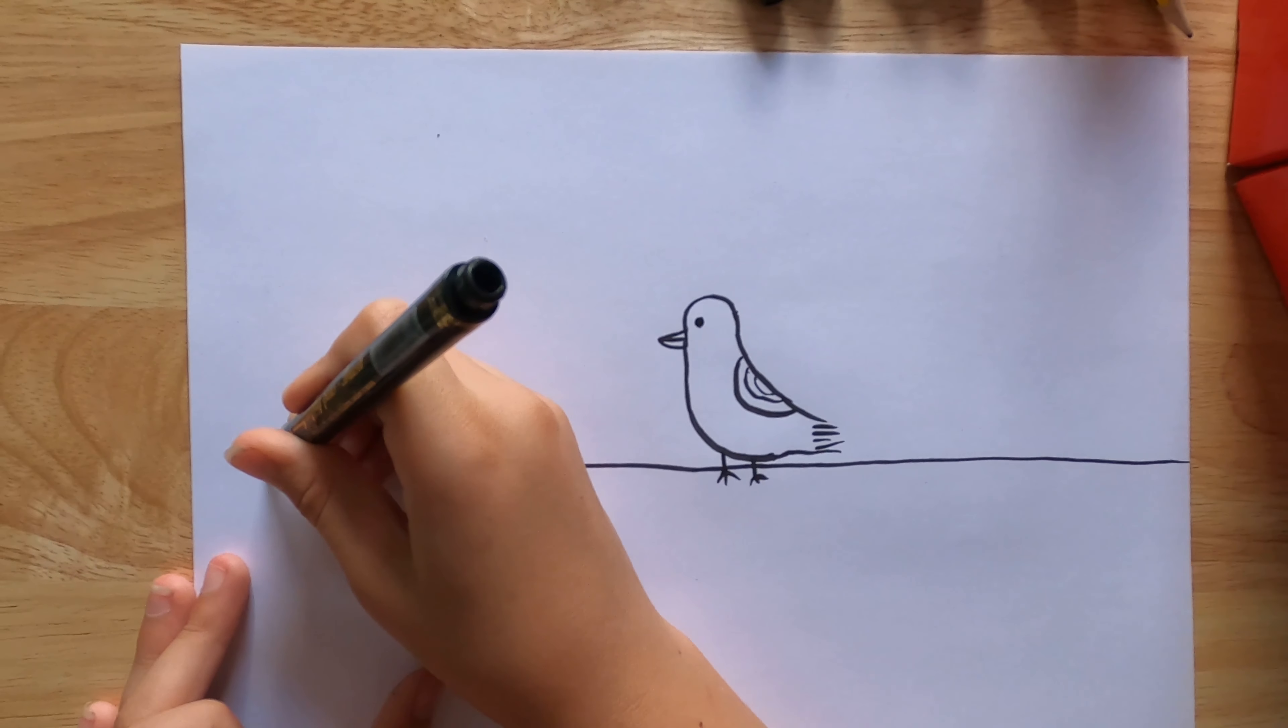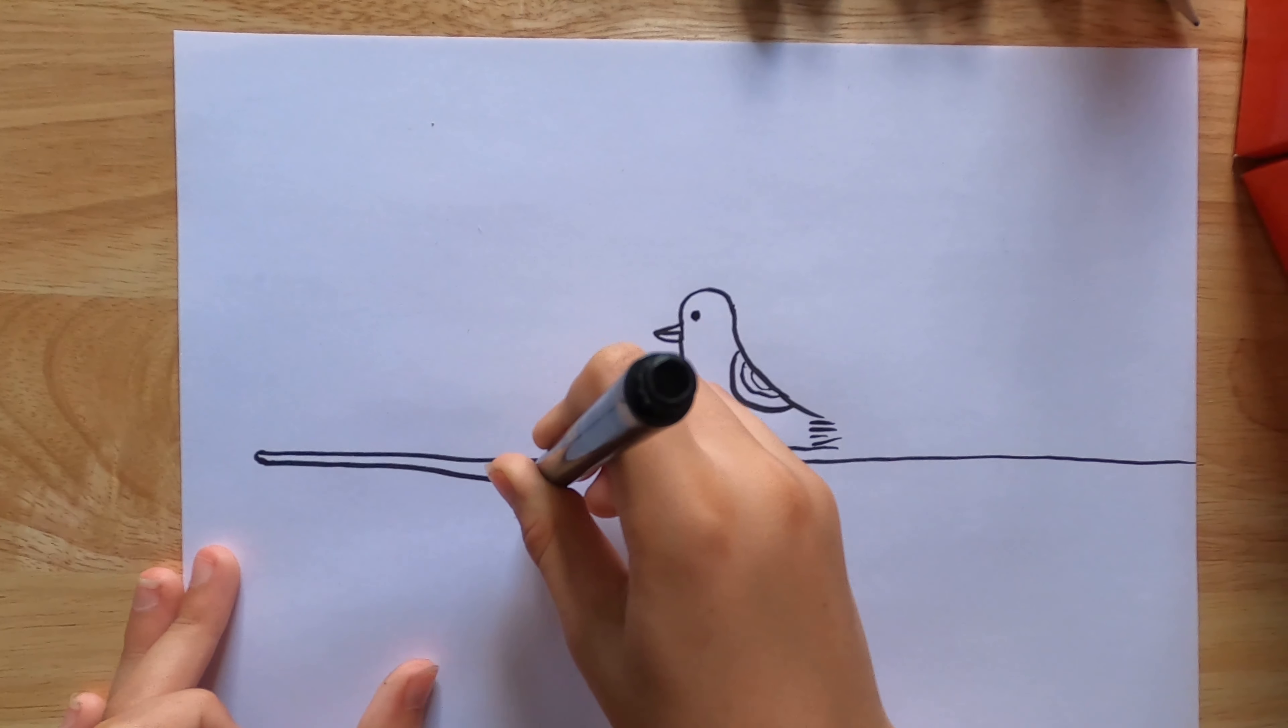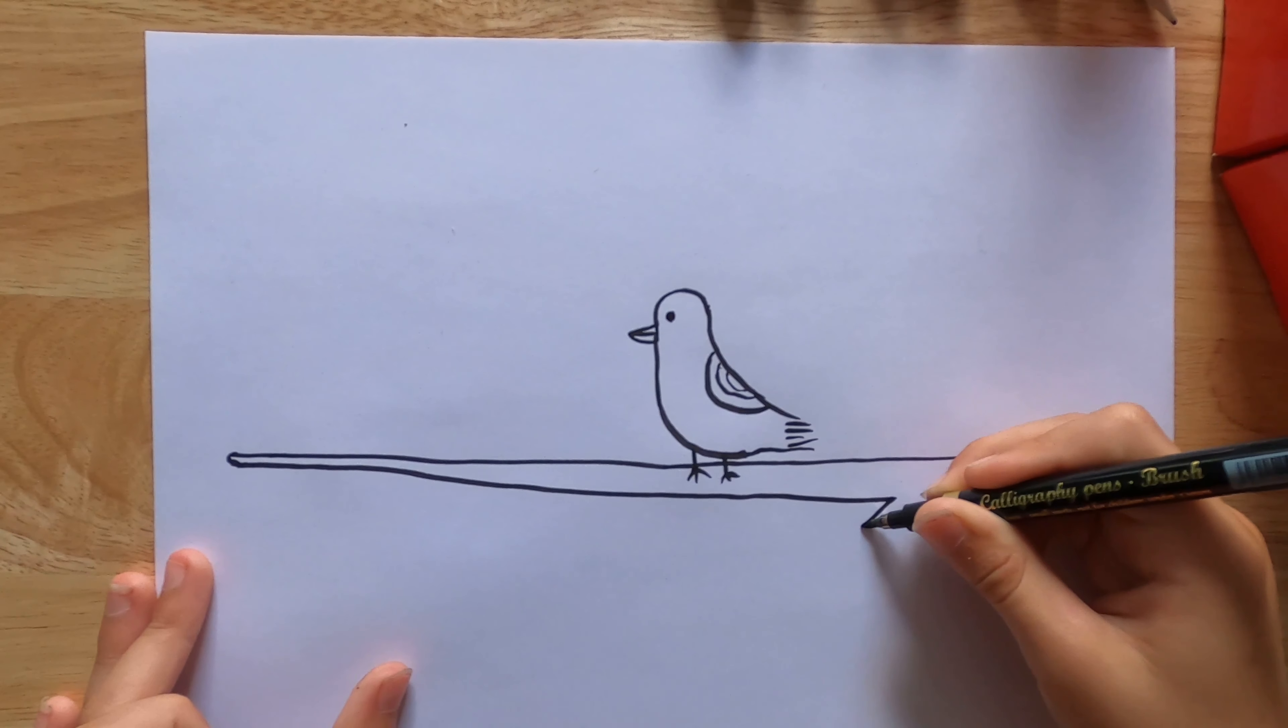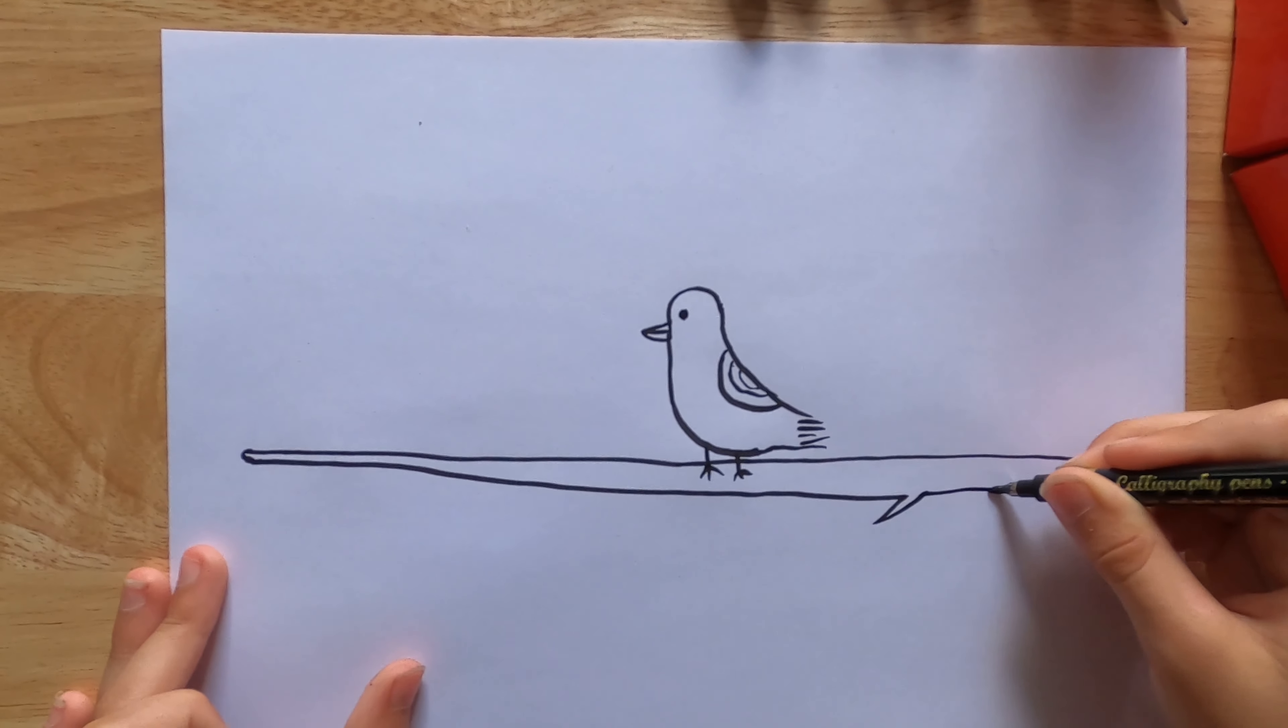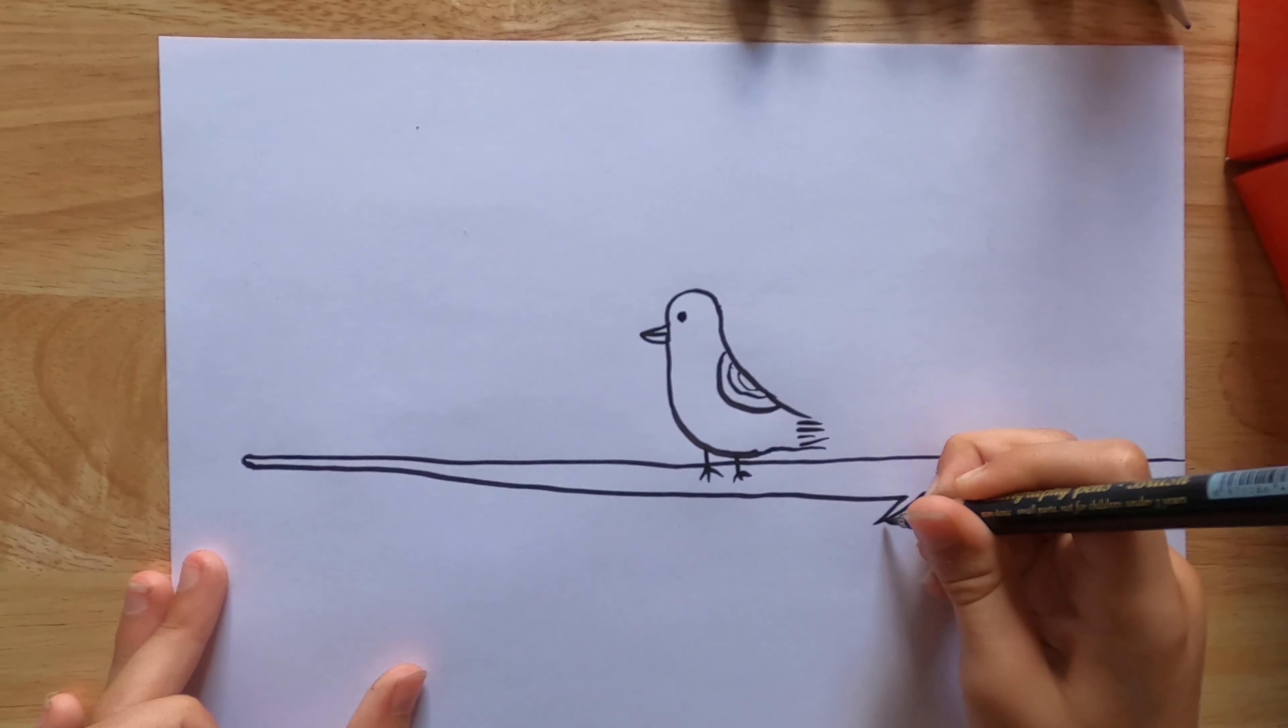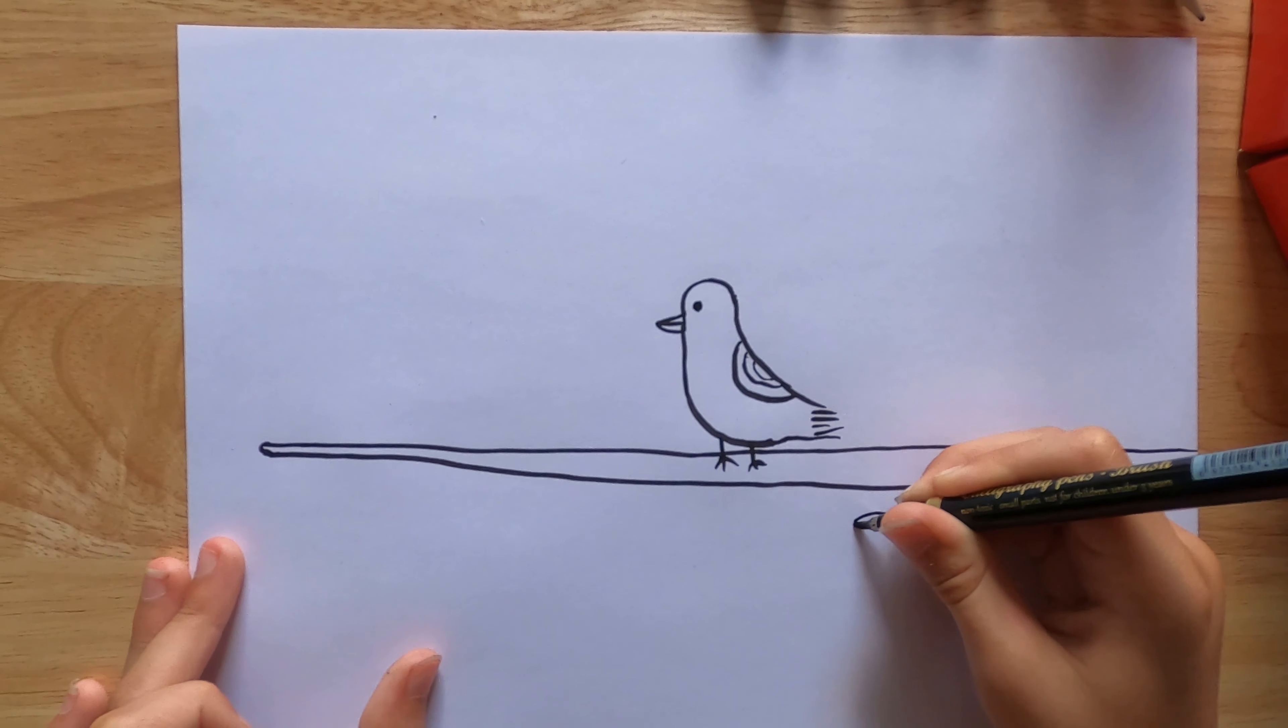Now we're going to do a curved point and do the exact same thing, getting wider each time. You may want to add a few sticks. Now if you had any branches, you could do some leaves.